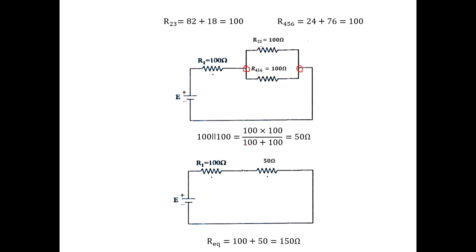Redraw again — the 50-ohm combination is now in series with the remaining resistor. Adding gives R_equivalent equals 150 ohms.